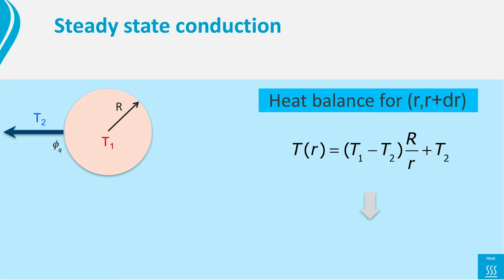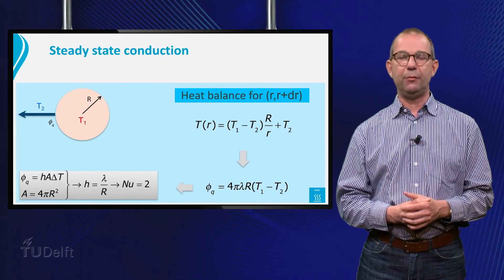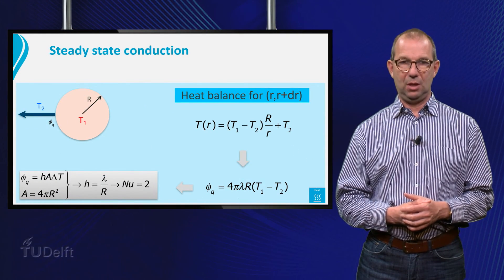Finally, we compute the heat transfer coefficient h, equaling lambda over capital R. And thus, find for the Nusselt number, as we saw in the previous MOOC, Nusselt is 2.